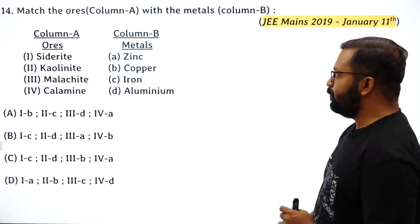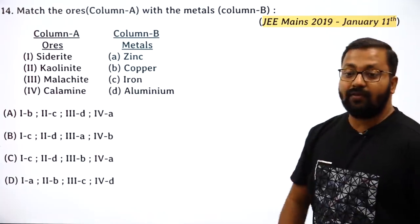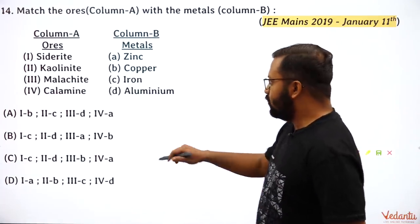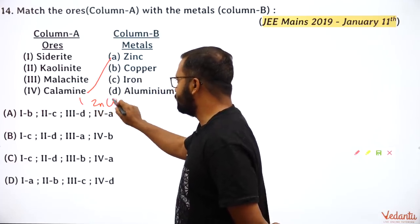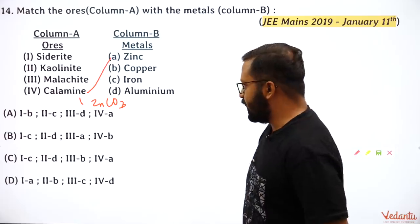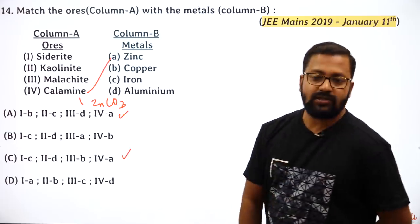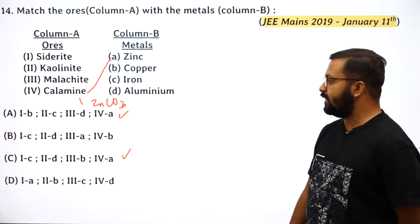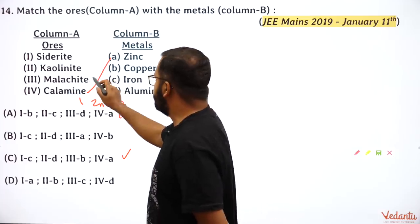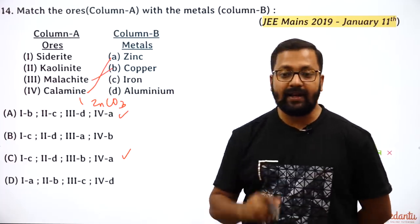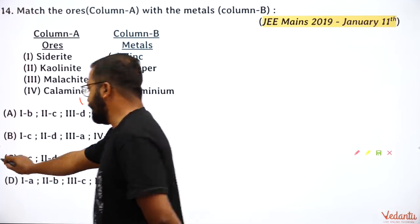Match the ores with metals: using elimination — calamine is ZnCO₃ (ore of zinc), so the fourth option should connect to zinc. Malachite is an ore of copper (malachite green), so the third option connects to copper — answer B. The right answer should be C. Siderite is the ore of iron and kaolinite is the ore of aluminium (a silicate of aluminium).